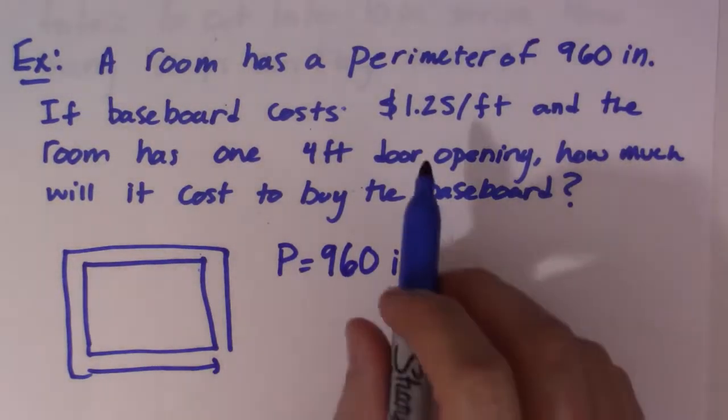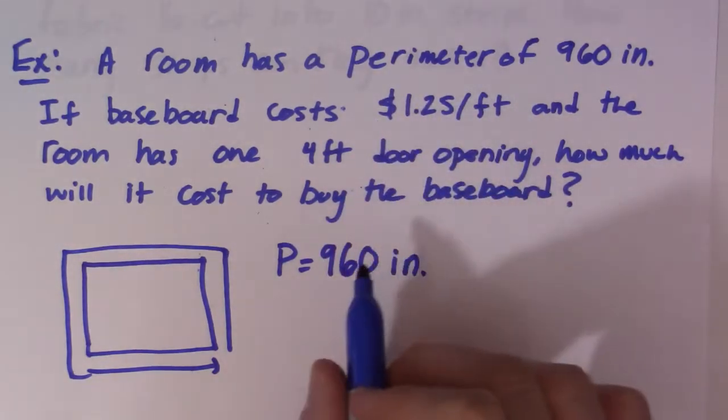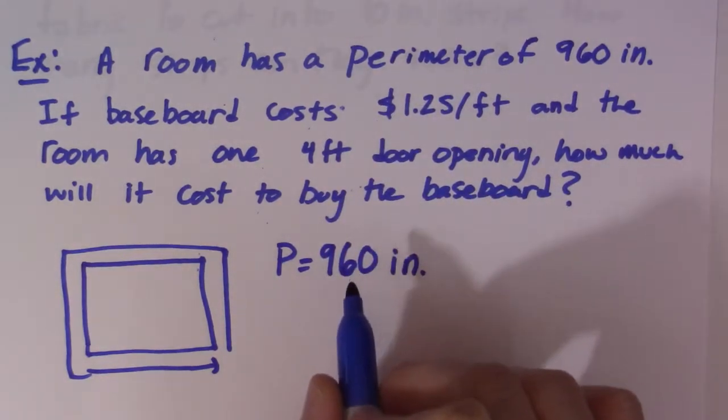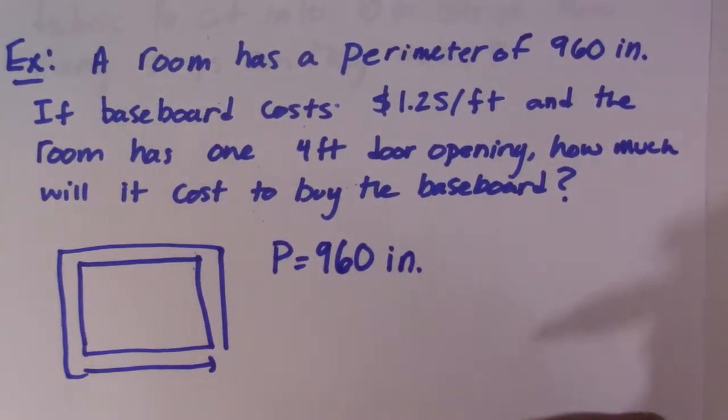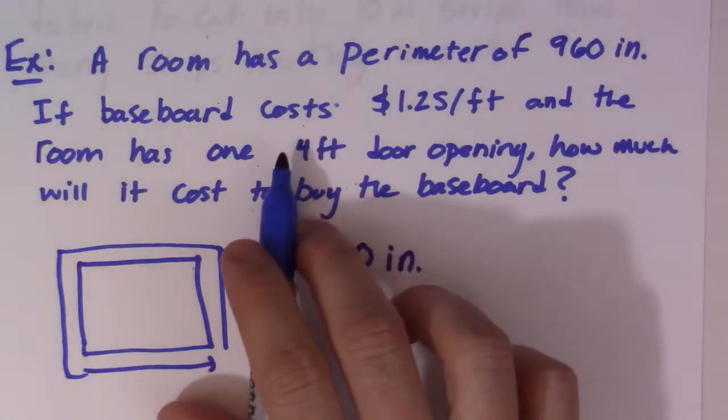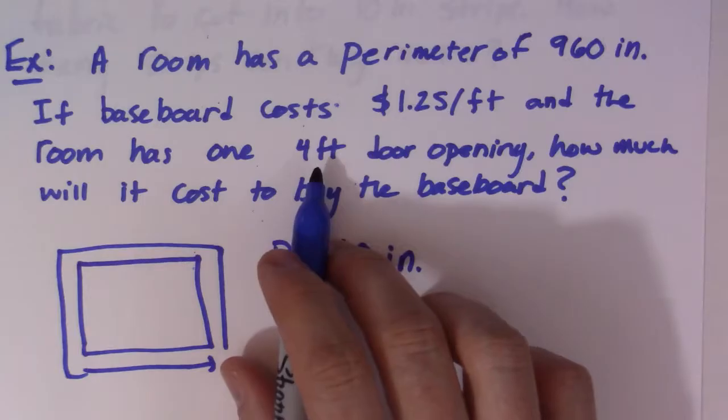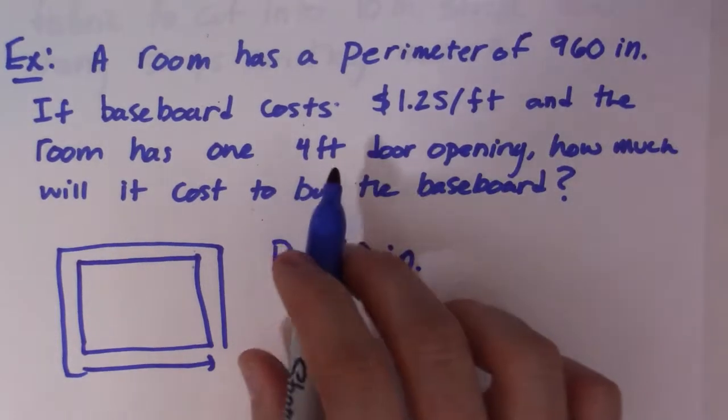The only problem is that our cost for baseboard is given in feet, so we need to change this 960 inches to feet. We also have to deal with the fact that there's a 4-foot opening where we're not going to put baseboard because obviously we're not going to put baseboard across a door opening.